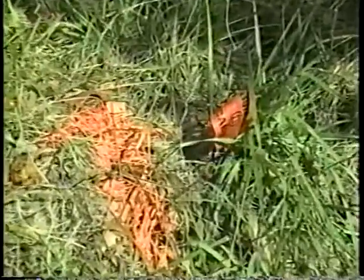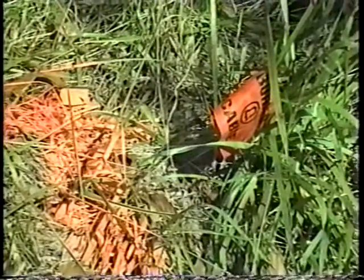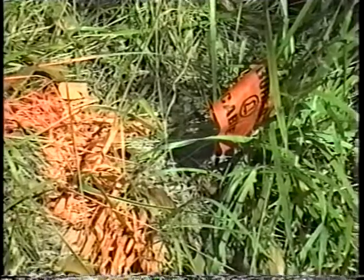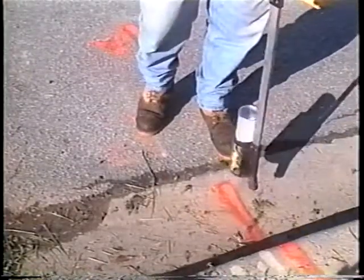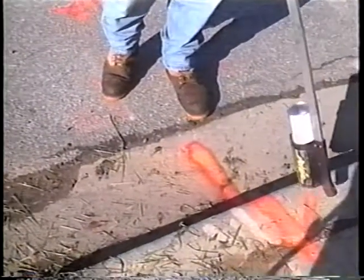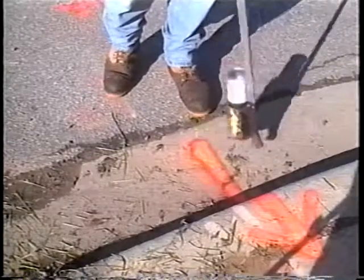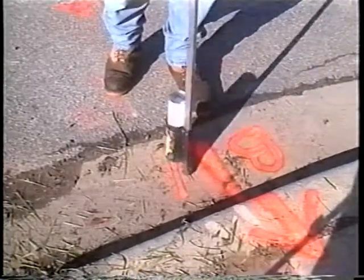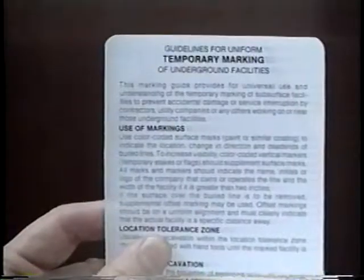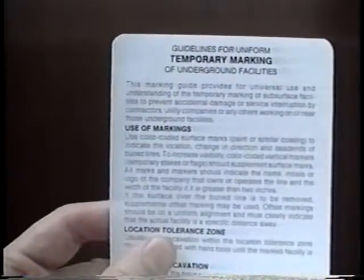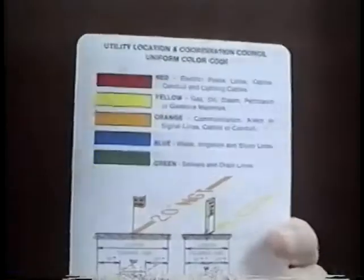To increase visibility, temporary survey stakes or flags should be placed to supplement the surface marks. All temporary markings or markers should indicate the name, initials, or logo of the company that owns or operates the facility. A uniform color code has been developed by the Utility Location and Coordination Council of the American Public Works Association to mark various categories of utilities. This pocket card from APWA contains guidelines for uniform temporary marking of underground facilities, including the uniform color code.